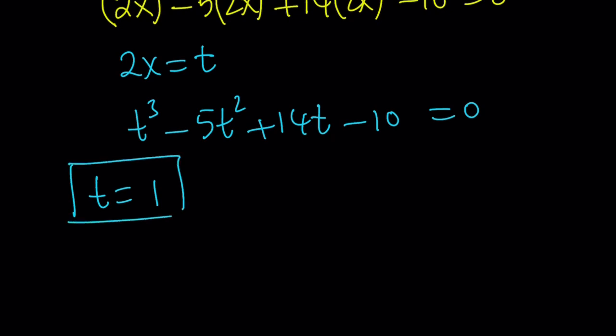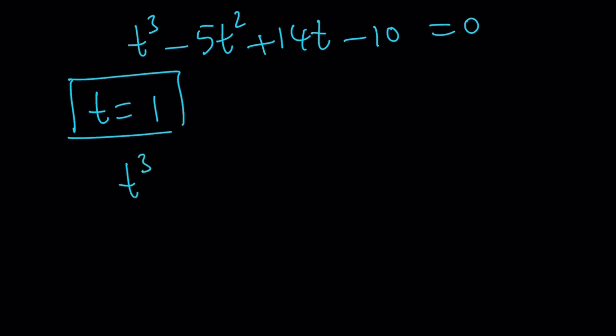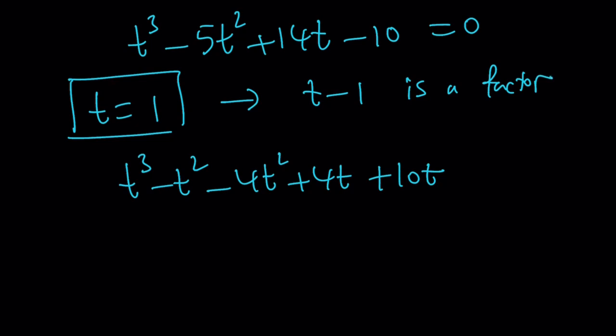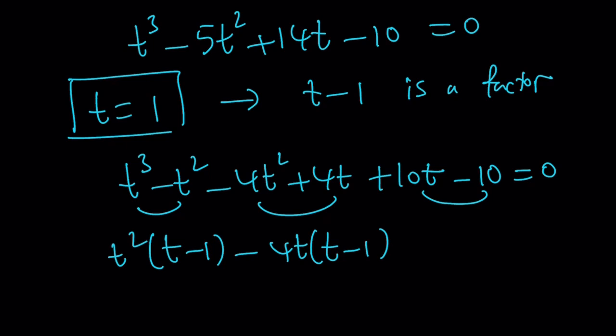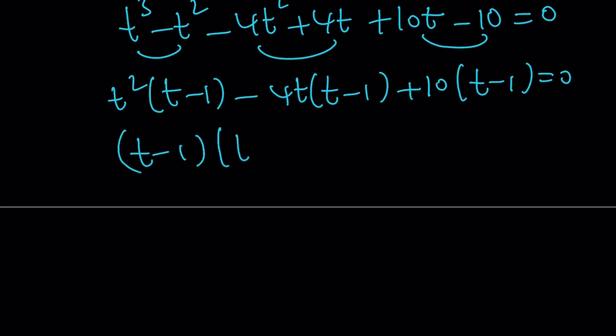Well, can I find the other solutions? Of course. You can go ahead and arrange this. t cubed minus t squared minus 4t squared plus 4t plus 10t. Notice that I'm taking terms to make this divisible by t minus 1. Because if t equals 1 is a solution, then t minus 1 is a factor. And I want to factor that out. So I have a balanced equation, which is really cool. And now I can factor by grouping. And notice that this is t squared times t minus 1. This is minus 4t times t minus 1. And this is plus 10 times t minus 1. And I can now take out t minus 1 and write the other factor as t squared minus 4t plus 10 equals 0.